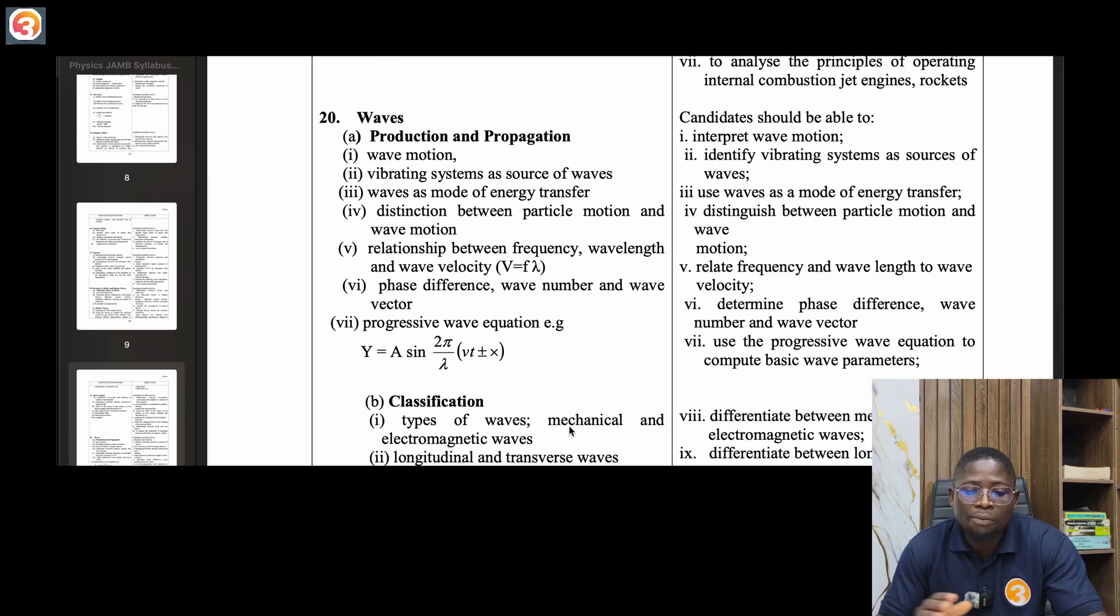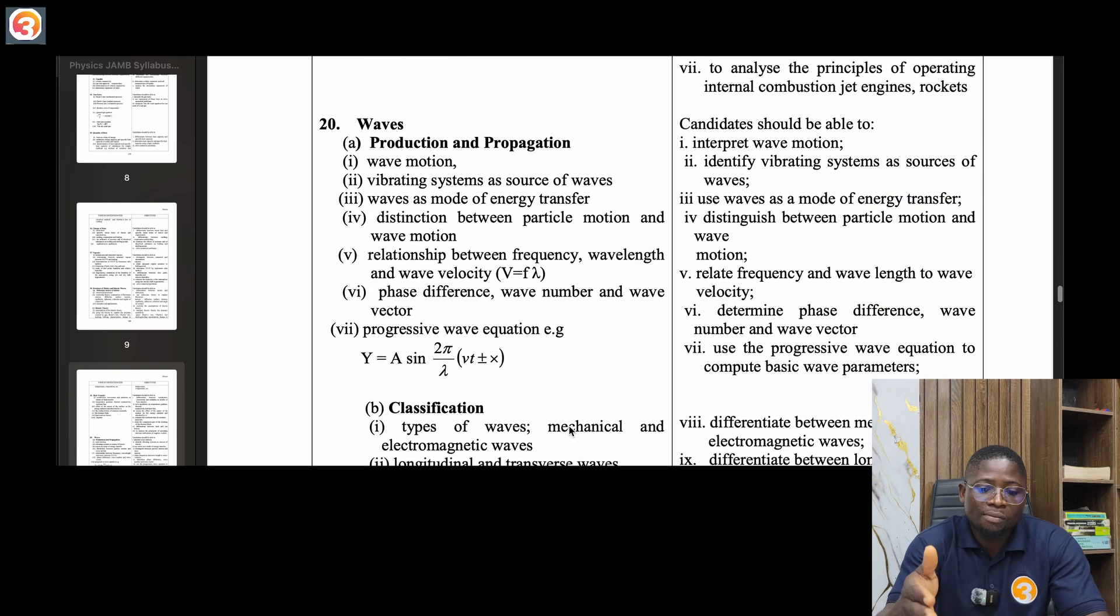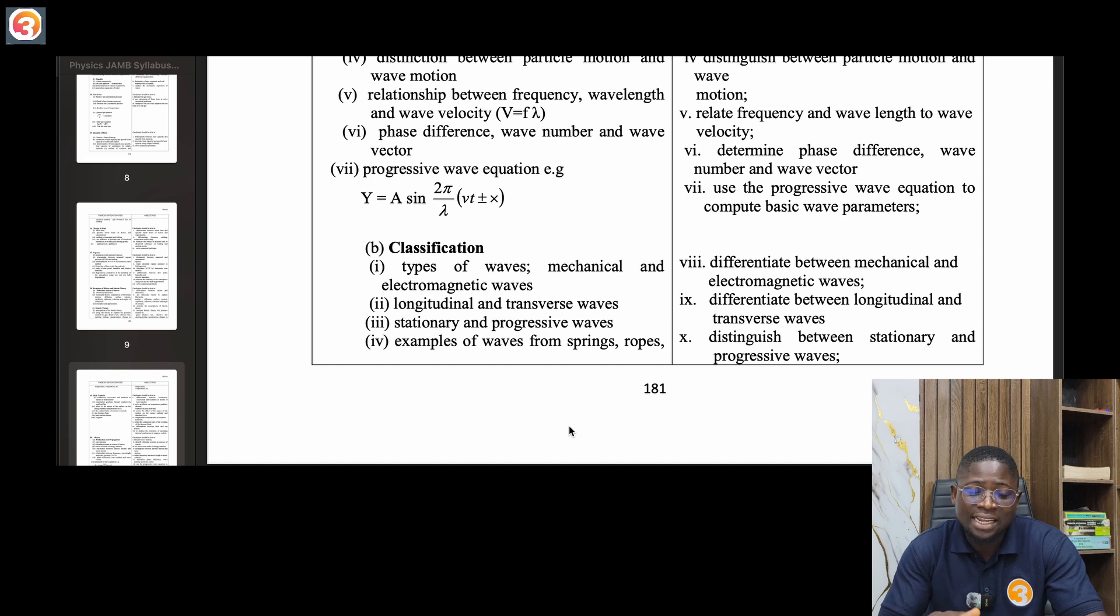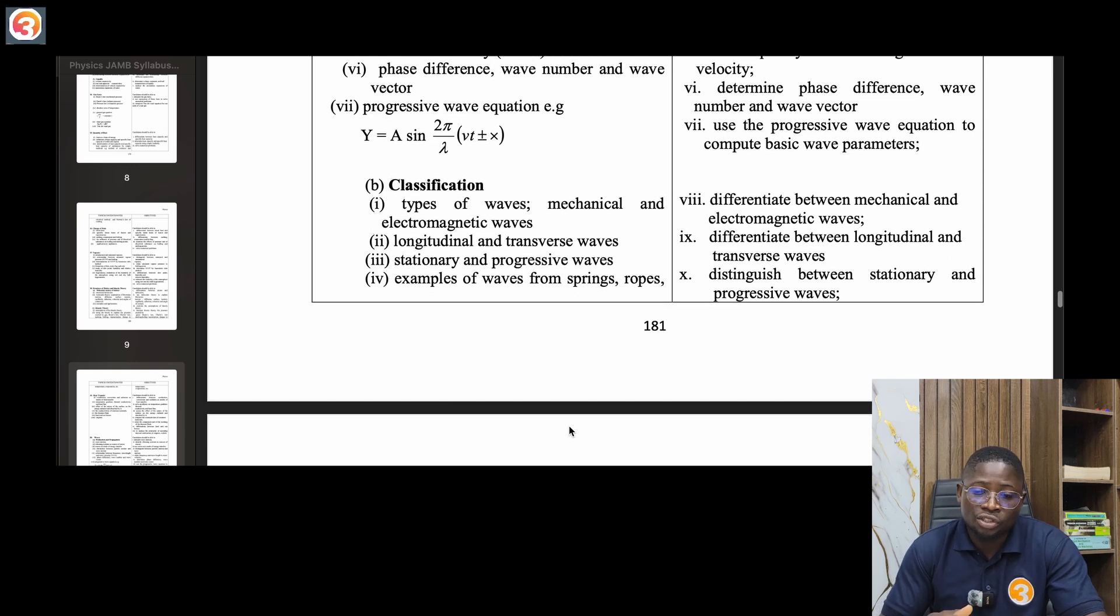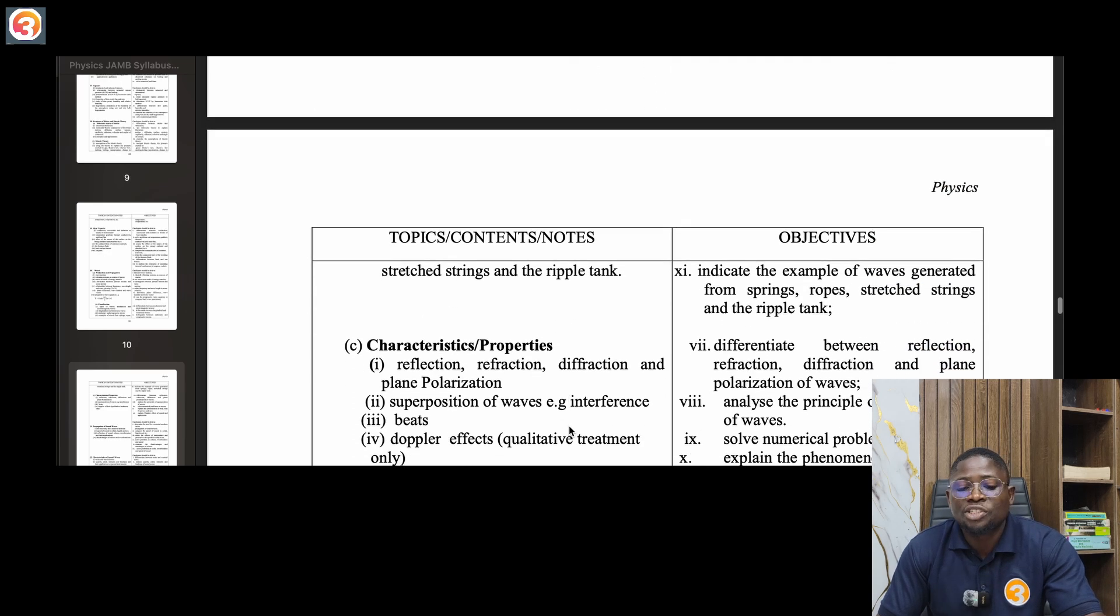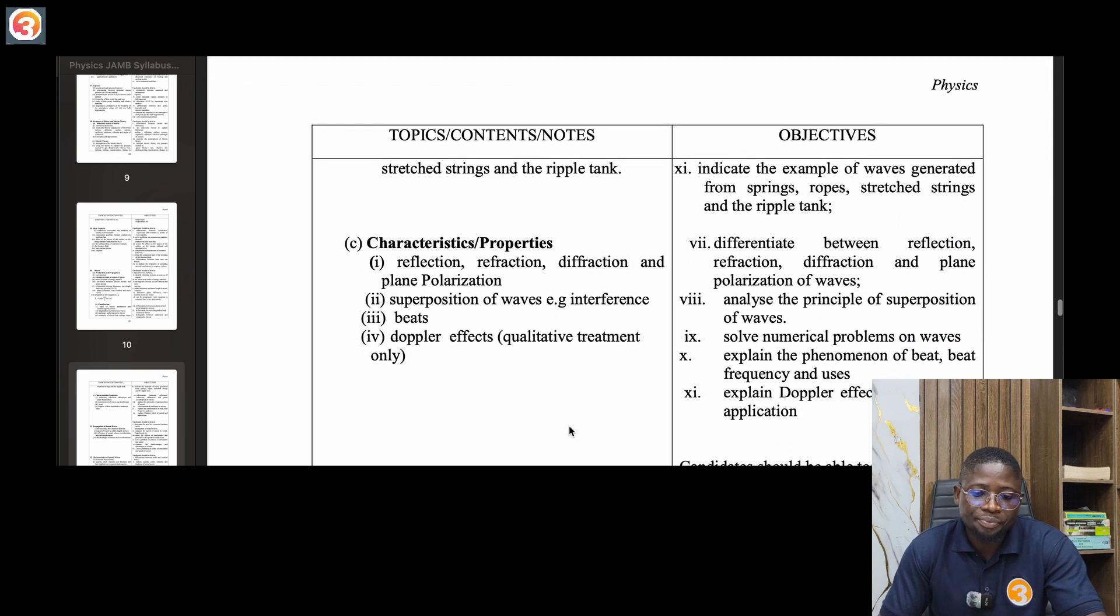Twenty, waves. Production and propagation of waves, wave motion, vibrating systems, progressive wave equation. Classification: types of waves, mechanical and electromagnetic waves, longitudinal and transverse, stationary and progressive waves, examples of waves from springs, ropes, stretched strings and ripple tank. Characteristics and properties: reflection, refraction, diffraction and plane polarization, superposition of waves, interference, beats, Doppler effect.